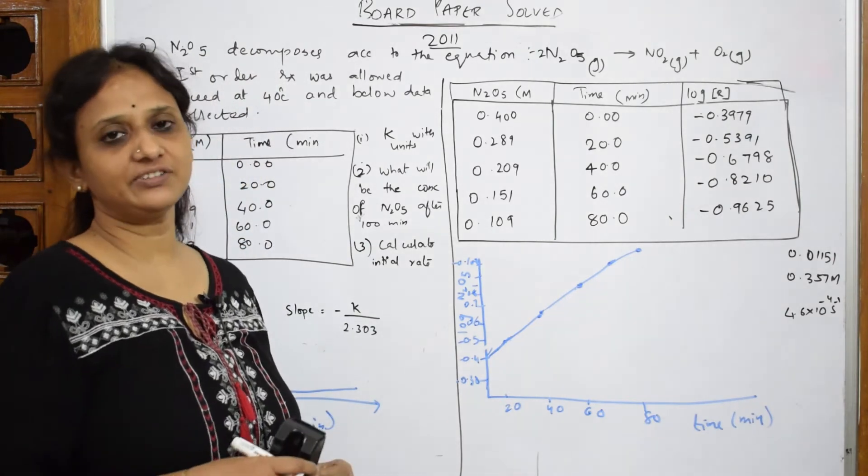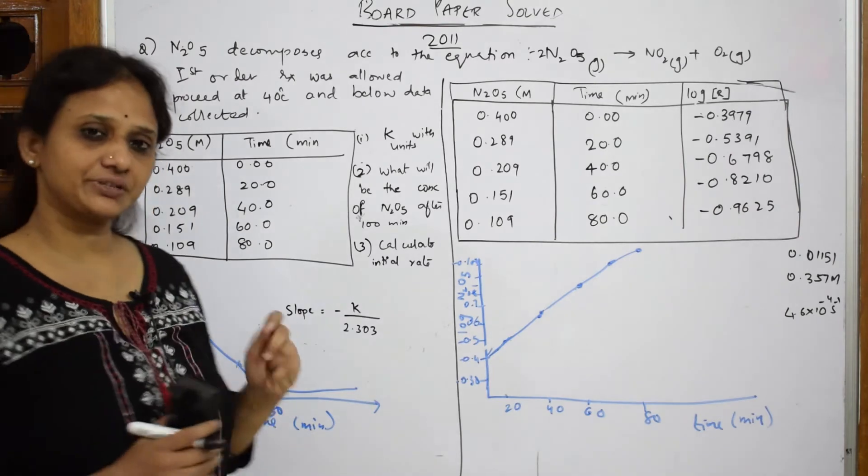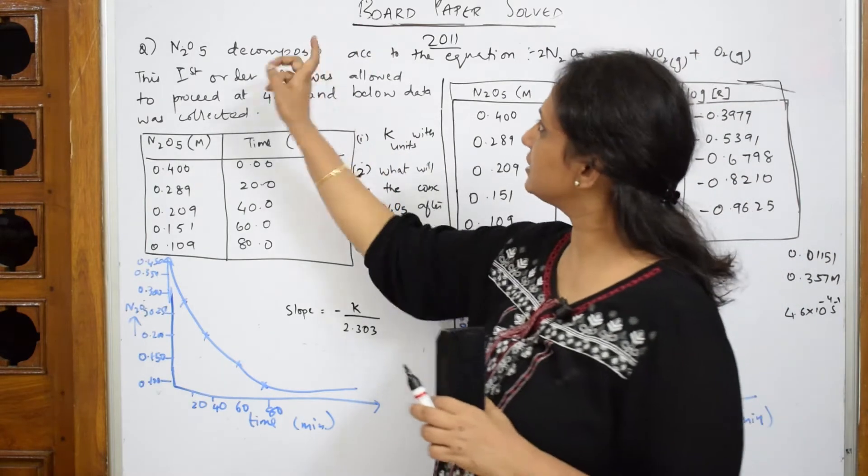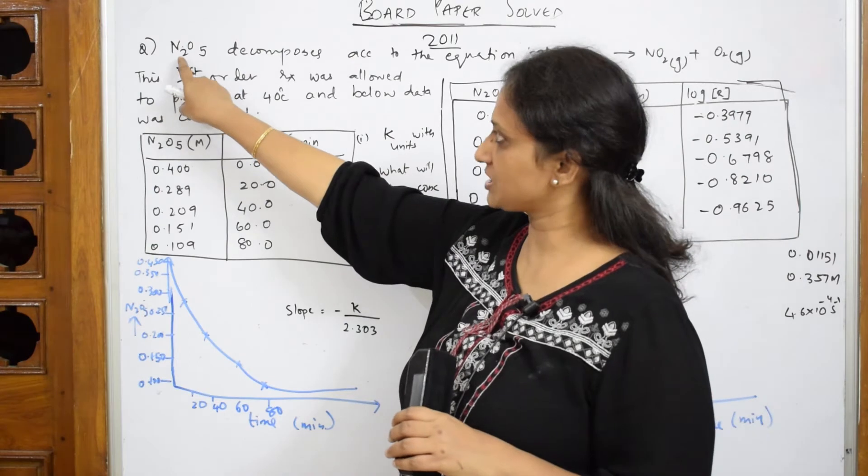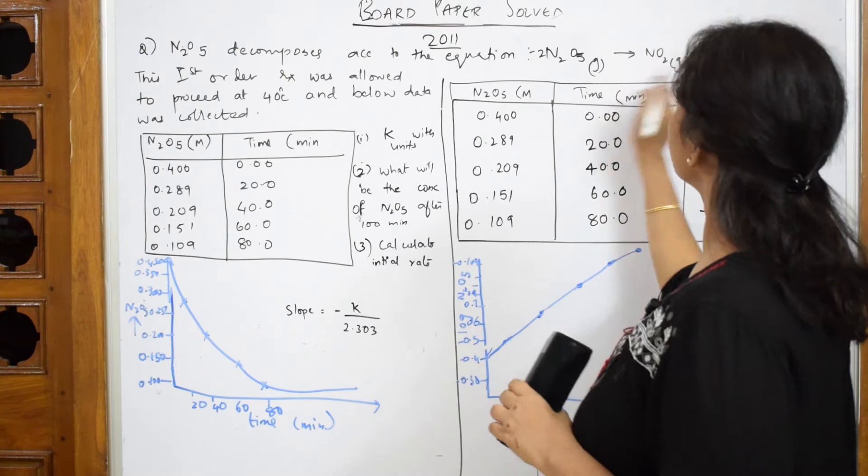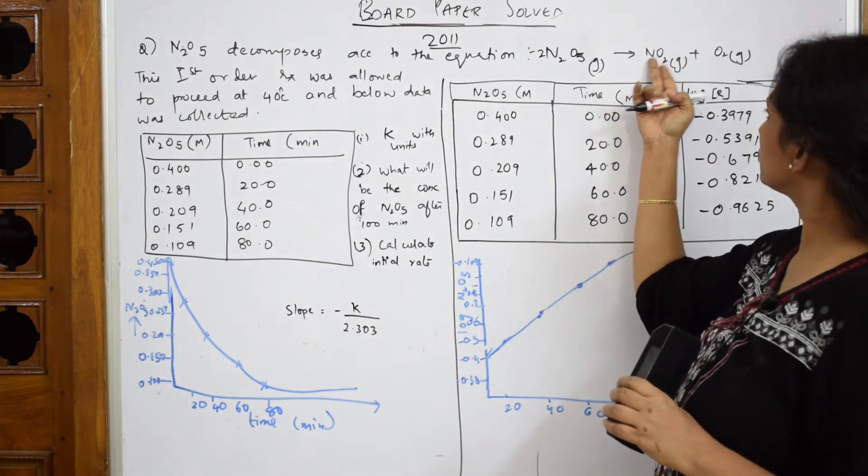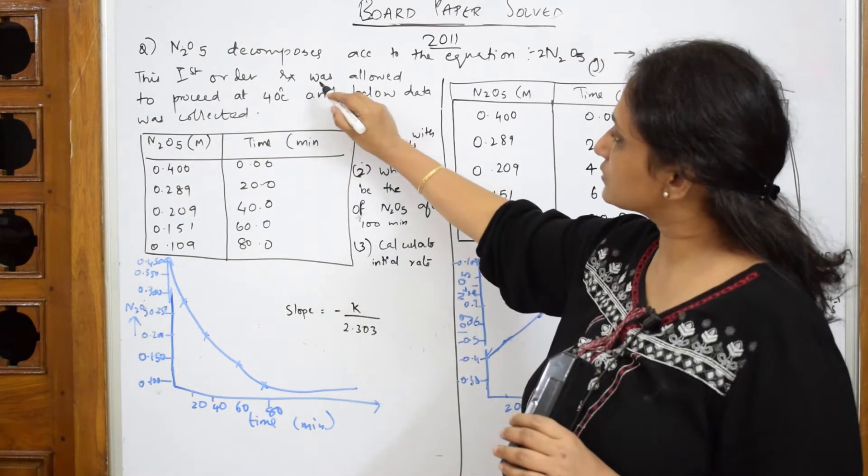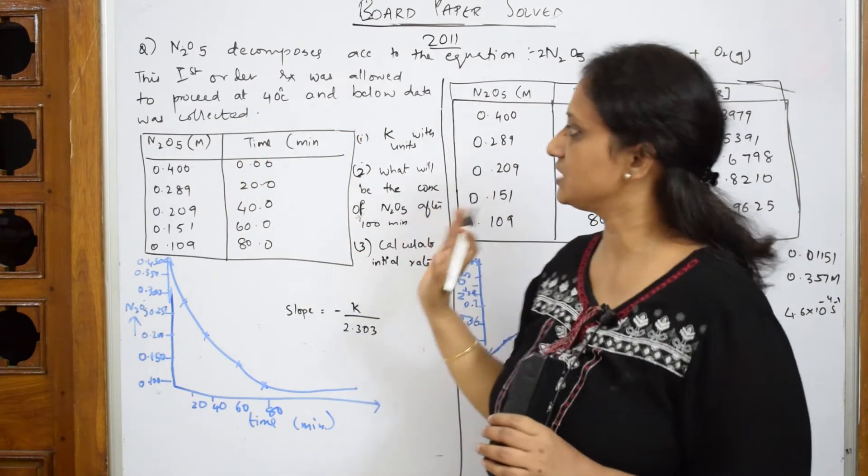Let us come back and do 2011 paper. We have two parts in this 2011 paper. Let us read this question. Basically, such questions are quite common in your board paper. What did they give us? They have given us that nitrogen pentoxide N2O5 decomposes according to the equation. This is the equation which is given to us. N2O5 gaseous state, it decomposes into NO2 and O2. This is the first order reaction. It was allowed to proceed at 40 degrees and below data was collected. This is the question given to us.